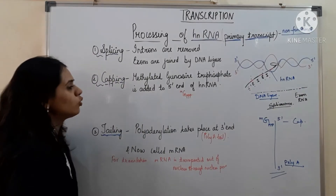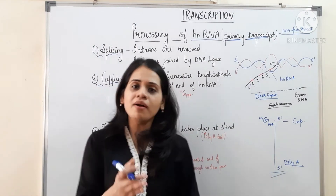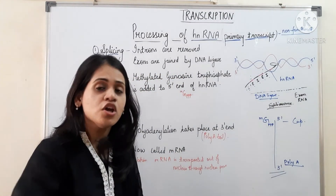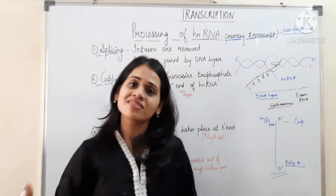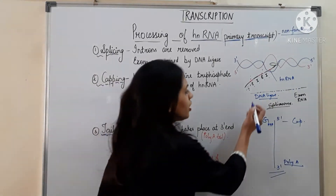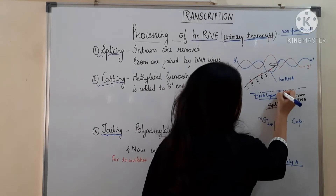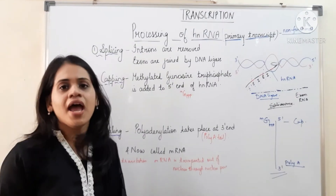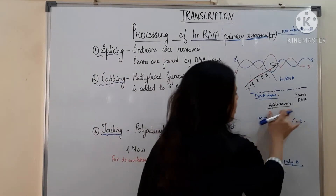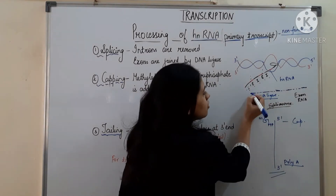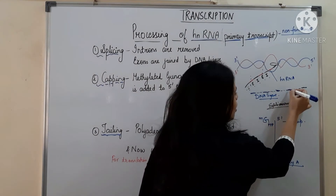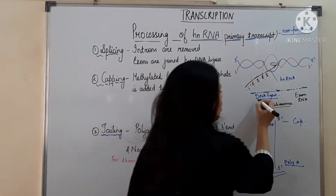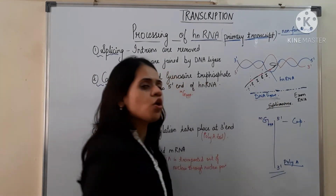Splicing means cutting. The hnRNA has introns and exons arranged alternately - intron, exon, intron, exon. We do not want introns because introns are not expressed; we only want the exons. So we splice out the introns using a structure called the spliceosome. The remaining exon fragments are then joined together by an enzyme called RNA ligase. This process is called splicing.